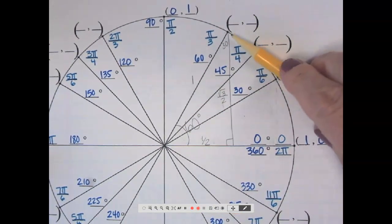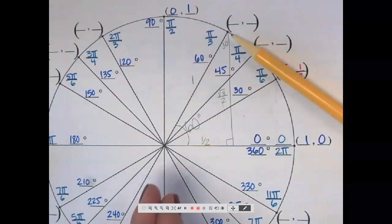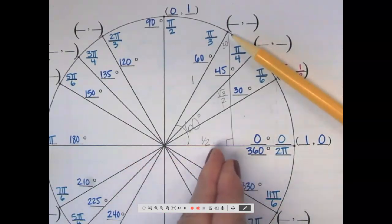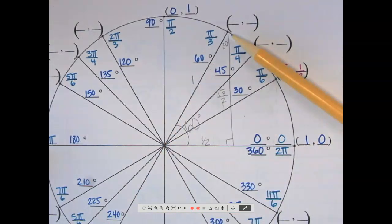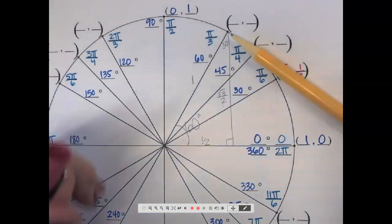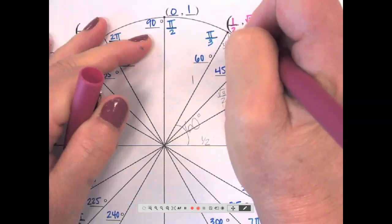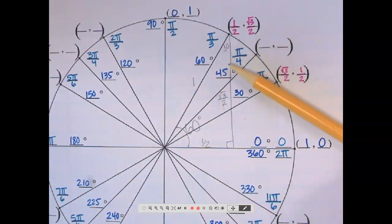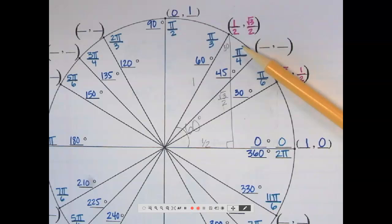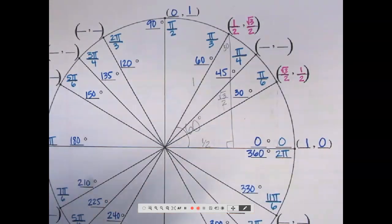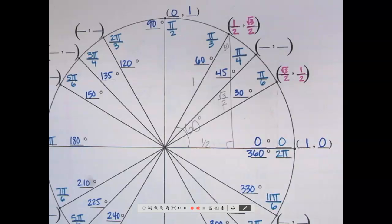So to get to that ordered pair right there, I have to travel right from the origin 1 half and up square root of 3 over 2, making that ordered pair 1 half comma square root of 3 over 2. Any questions on those two ordered pairs? Do you see why they're the reverse of each other? Because the angles are reversed. So the sides opposite and adjacent are reversed.